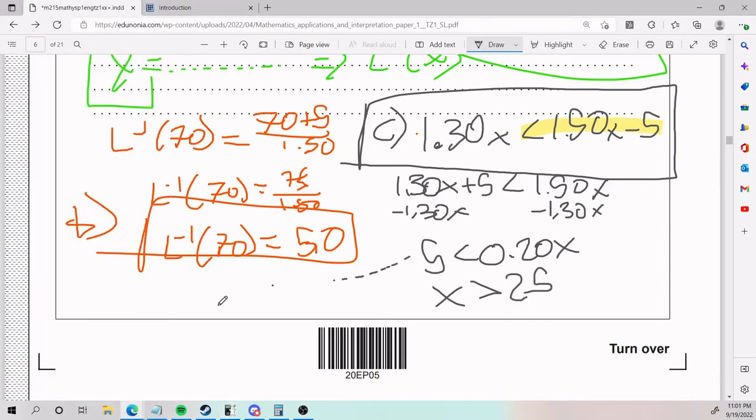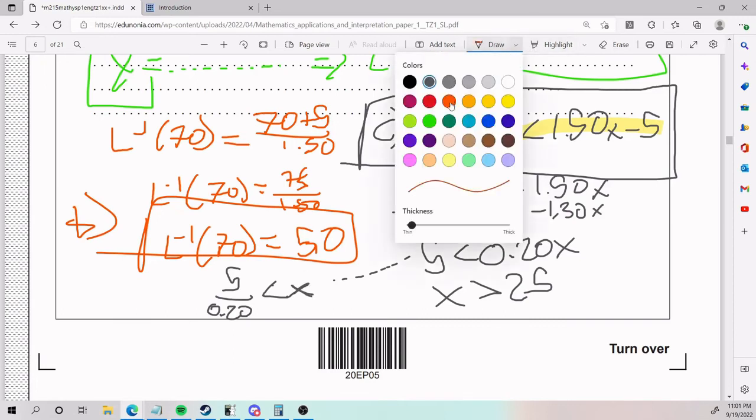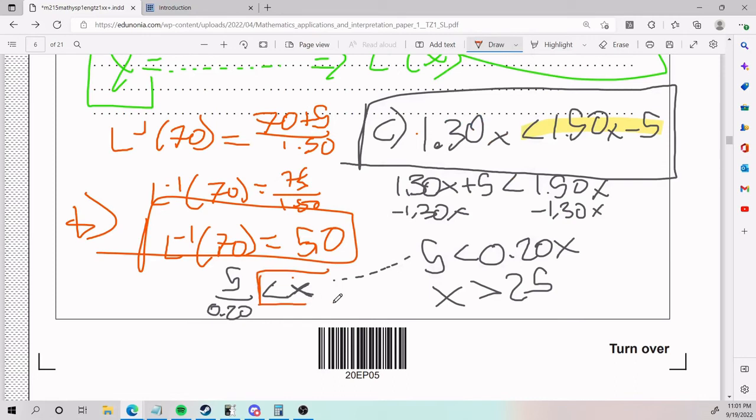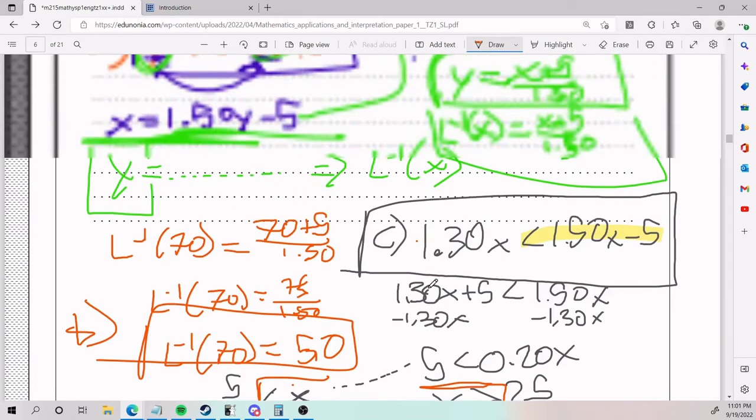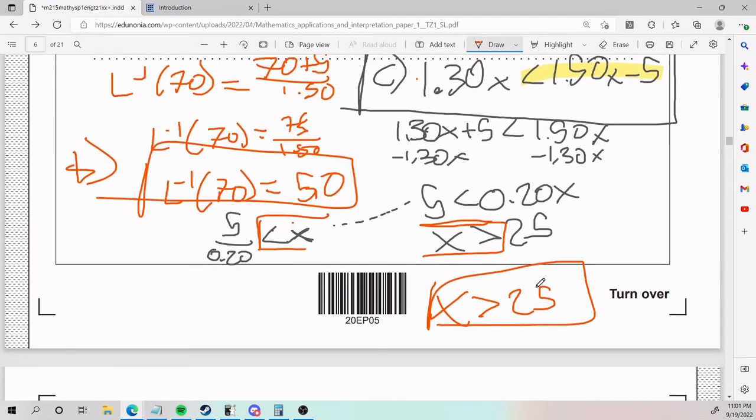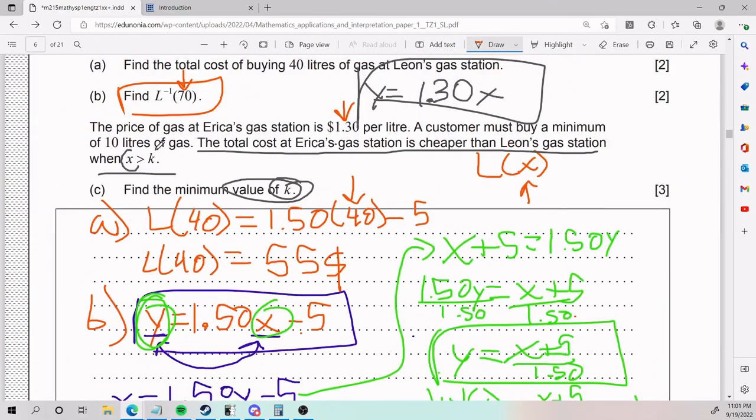Also, here I skipped a step. I hope no one freaked out here. I did 5 divided by 0.20. And I made sure that my X was always facing the symbol. My symbol was always facing X. I did the same here. I'd rather have X on the left side. That is a step that I missed. Sorry about that. X has to be greater than 25. And this also sort of implies that the minimum value of K is 25. Because it is at this cutting point, this is like the cutting point of my decision.